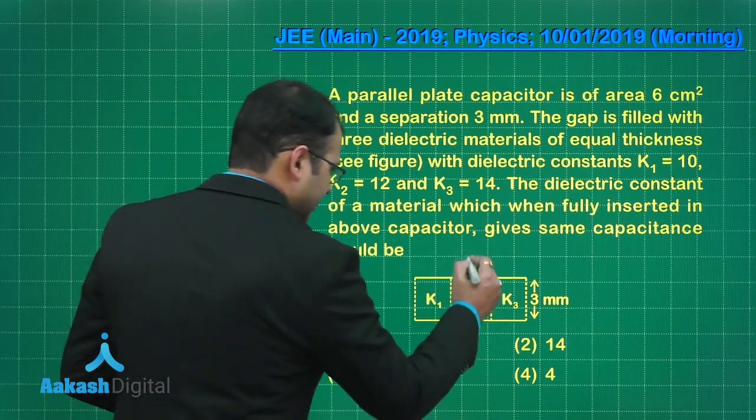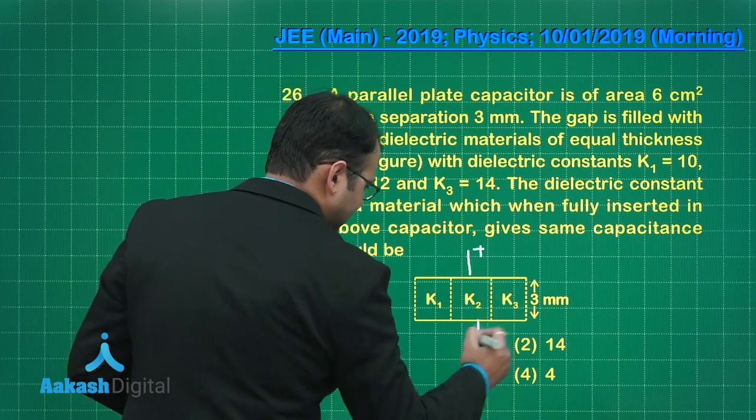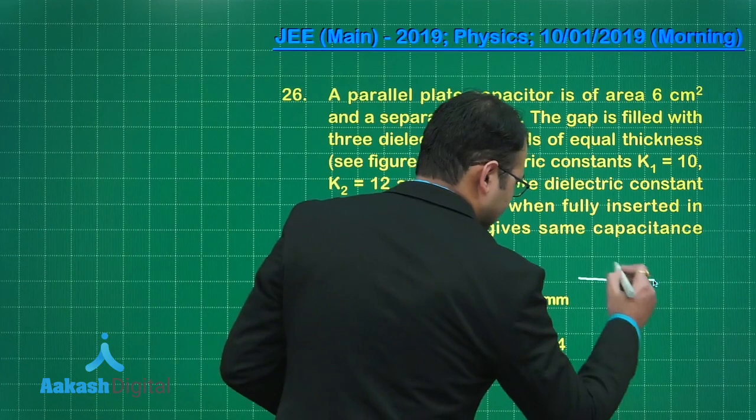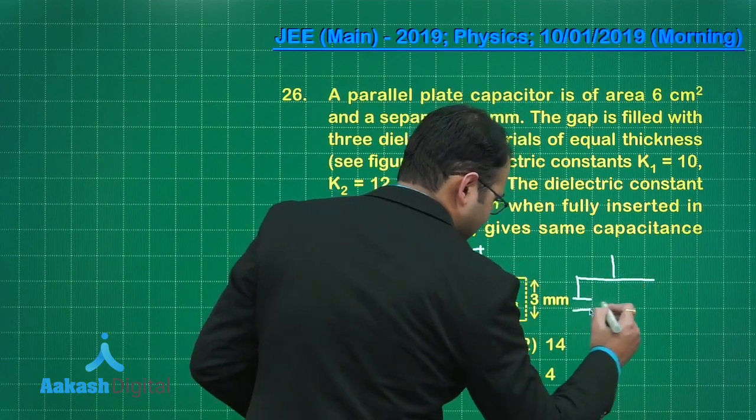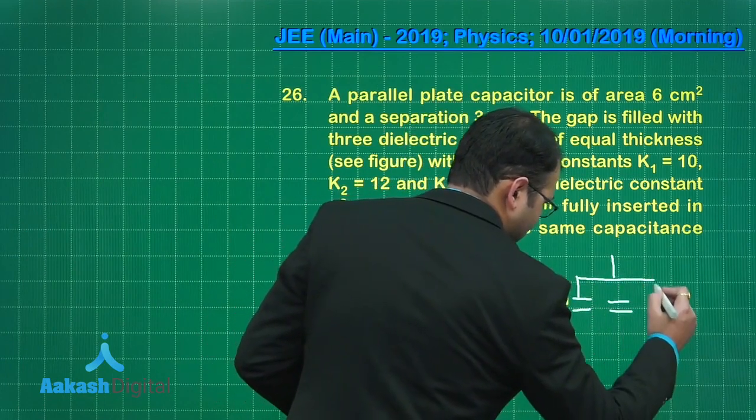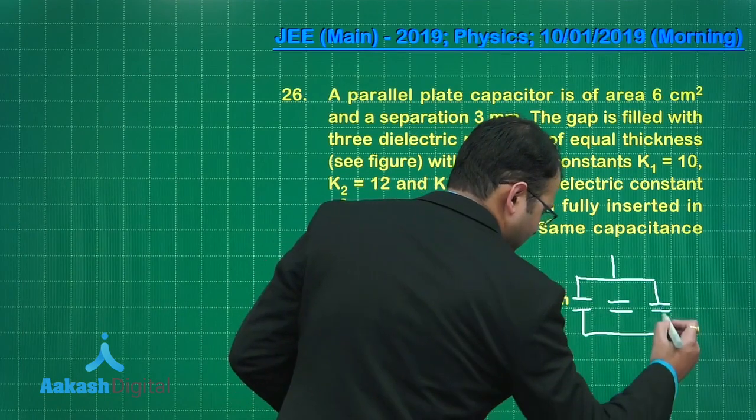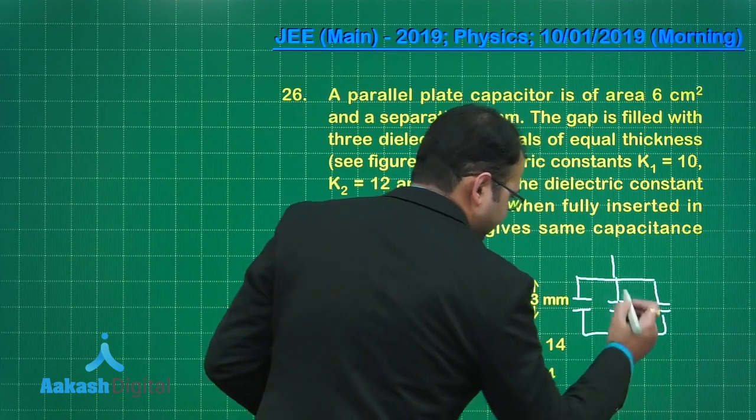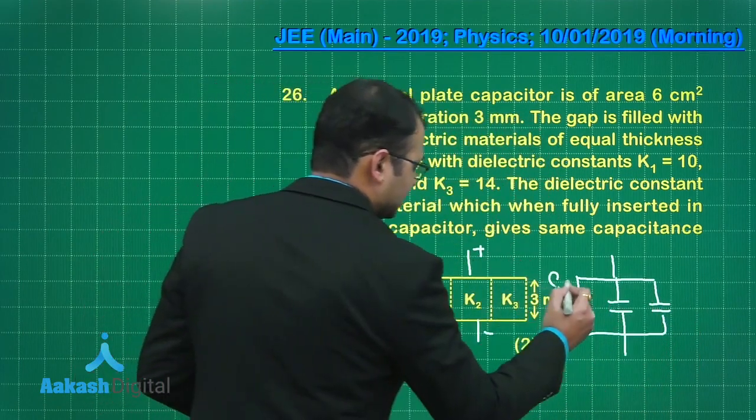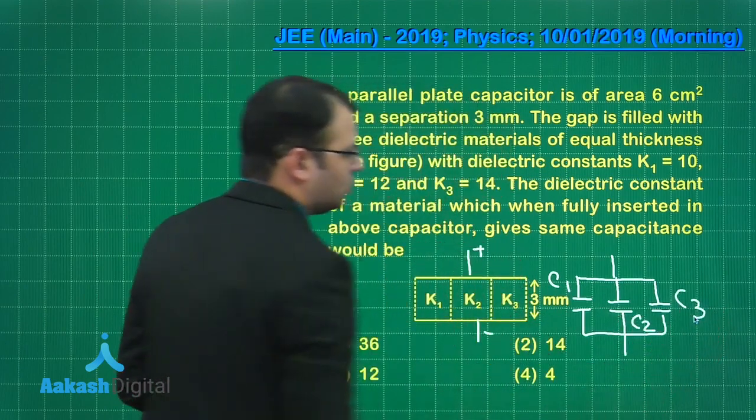In this case, let's consider this as positive terminal and this as negative terminal. So this can be treated as this case. It's basically the parallel combination of three capacitors C1, C2 and C3.